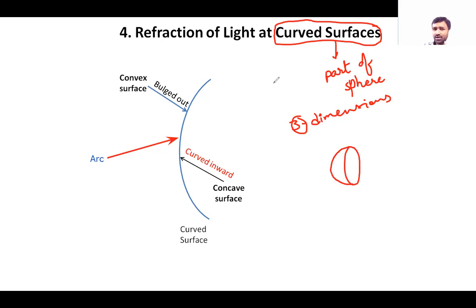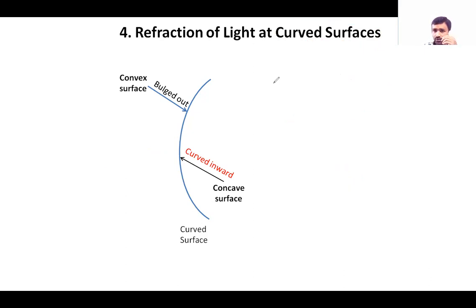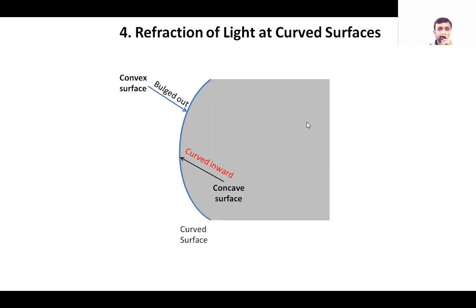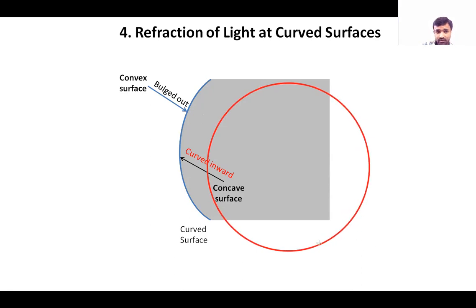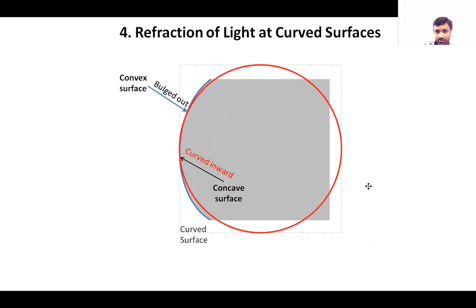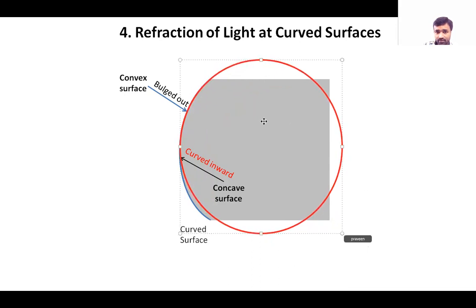What are the terms related to a sphere? Center, radius, curvature — all of that we can use for this curved surface. Now the terminology: before going there, I am using this shaded region. Imagine this is a glass — as we discussed in activity one. Inside the glass we filled water yesterday. We have two different mediums inside the glass and surrounding the glass.